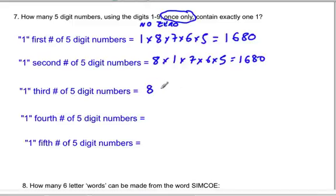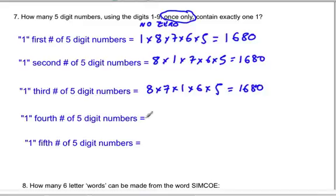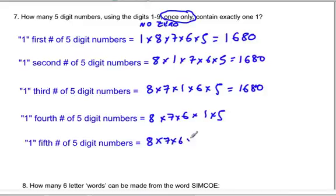We end up getting the same result every time. If 1 comes third, it's eight times seven times one times six times five. If it comes fourth, it's eight times seven times six times one times five. If it comes fifth, it's eight times seven times six times five times one. All of these are equal to 1680.